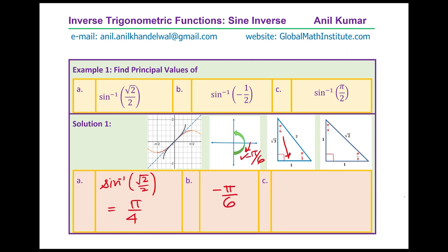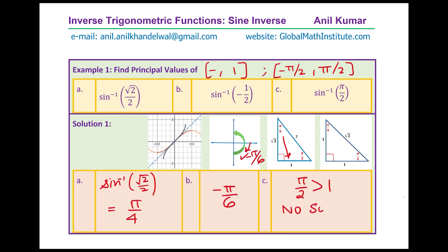We always provide the solution in the region where the value is between minus pi by 2 to plus pi by 2, and the domain is from minus 1 to 1. If the input value is not between minus 1 and 1, there is no output. For sine inverse of pi by 2: pi divided by 2 is approximately 1.57, which is greater than 1. Since pi by 2 is greater than 1, it has no solution.